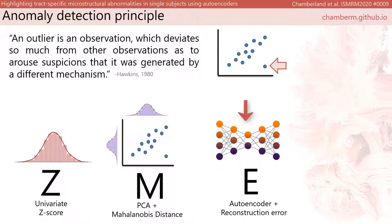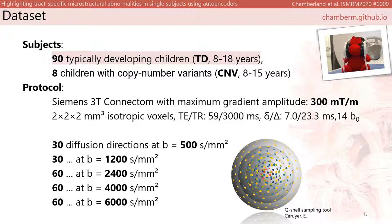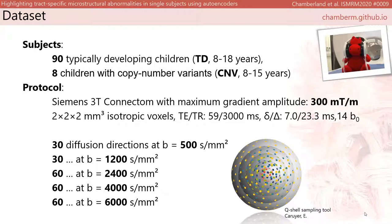Diffusion MRI data were acquired from 90 typically developing children. We also acquired data from 8 children with a CNV at high genetic risk of neurodevelopmental and psychiatric disorders, which are relatively rare and challenging to recruit for research imaging, creating a so-called class imbalance between the two groups. This was done using a Connectome MRI scanner and a multi-shell acquisition with a B-value up to 6000.